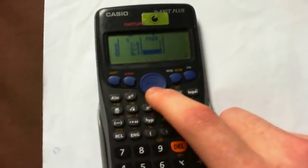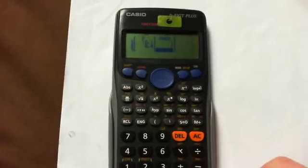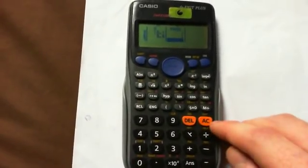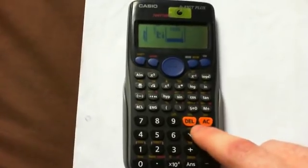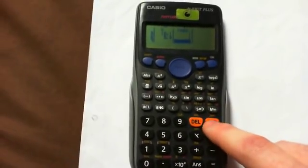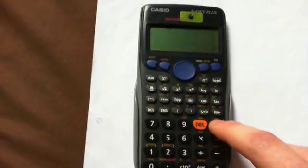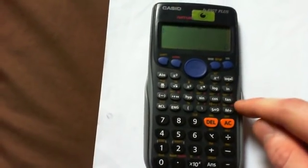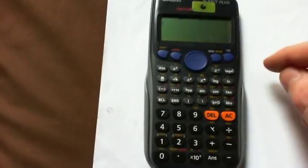So once you've got all your data input, once all your data has been input in, you now have to press the AC button. This is the bit that confused me, because you think it's going to delete it all, but the AC button inputs all the data you've just put in the calculator into the calculator in order to be analysed.